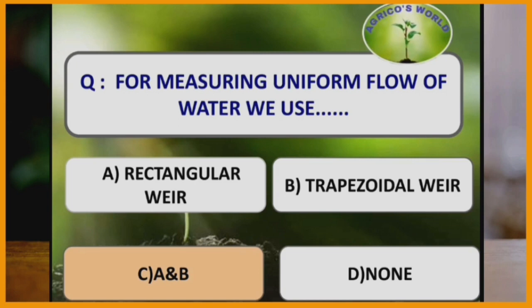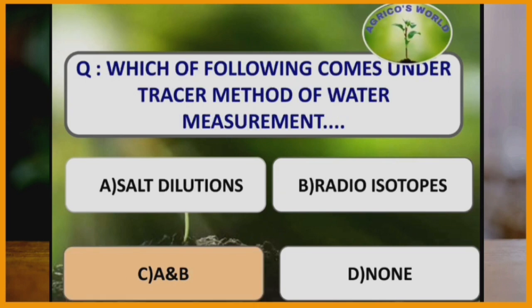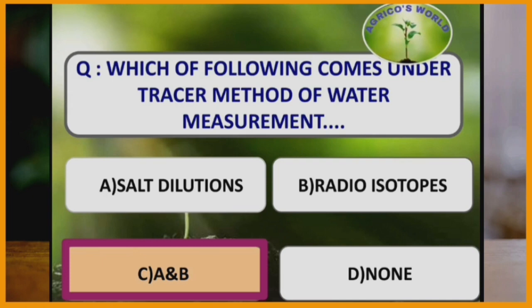For measuring uniform flow of water, we use rectangular weir and trapezoidal weir. Both weirs are used for measuring uniform flow of water. Salt dilution and radioisotopes both are tracer methods of water measurement.